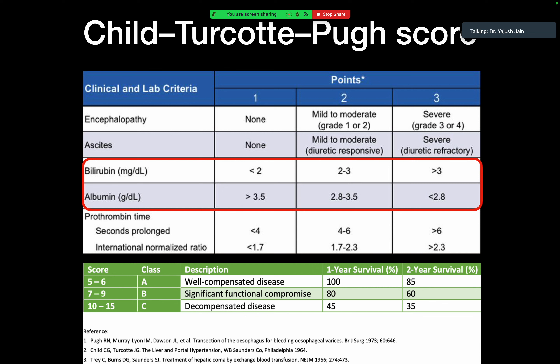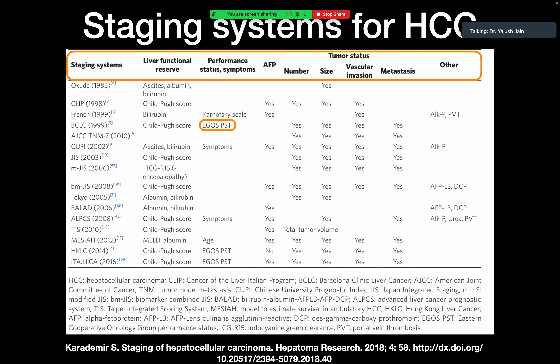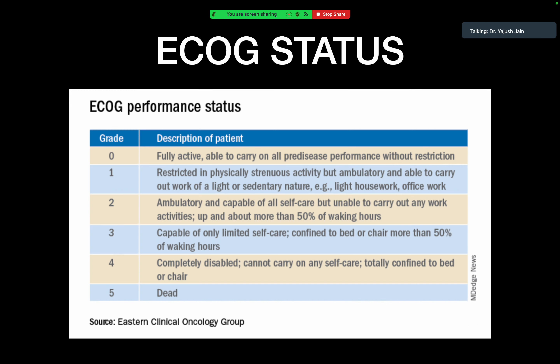Bilirubin less than 2 mg/dL scores one, 2–3 mg/dL scores two, and greater than 3 mg/dL scores three. Both albumin and bilirubin are seen in LFTs. For prothrombin, a PT/INR test is performed and based on values, a score of one to three is assigned. Combining all scores, the patient is finally labeled as class A, B, or C.